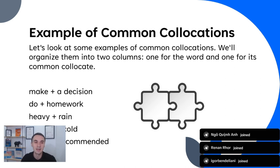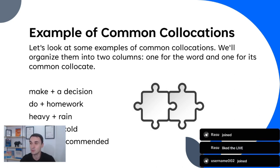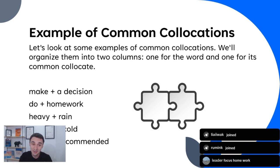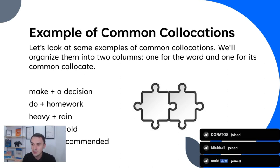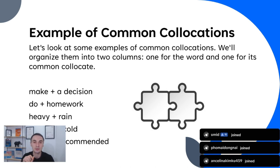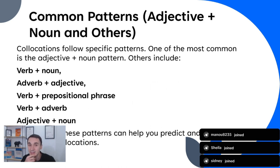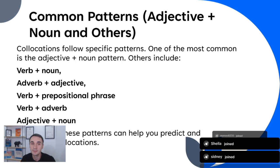Let's see more examples. 'Heavy rain' — it's wrong to say 'strong rain.' We say 'strong wind' but 'heavy rain,' because 'heavy' and 'rain' collocate with each other. Think of this as two puzzle pieces that fit perfectly together. You can also say 'focus on your homework' — that's good too.